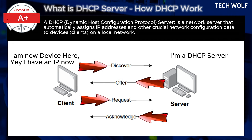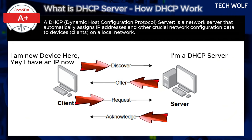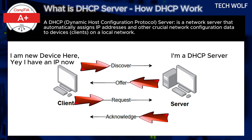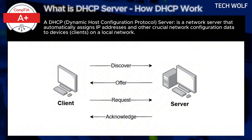If the client doesn't renew, the IP address will eventually be released and can be assigned to a different device. When a device leaves the network and disconnects, its IP address remains reserved until the lease expires. Once the lease period ends, the IP address is released and returned to the pool of available addresses on the DHCP server, making it available for other devices.